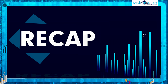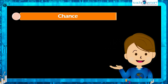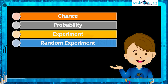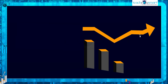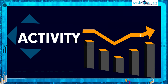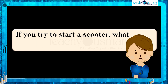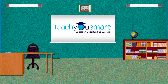Let's have a quick recap. Today we discussed the terms: chance, probability, experiment, random experiment, outcomes, and equally likely outcomes. Before winding up, let's check how much you understood by doing an activity: if you try to start a scooter, what are the possible outcomes? That's all for now — see you all in the next class with another interesting topic.